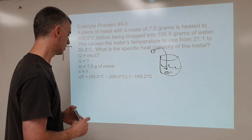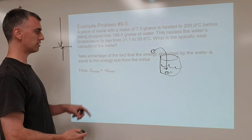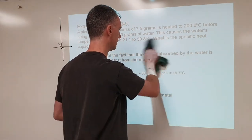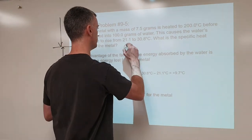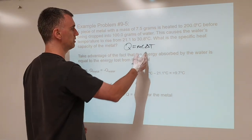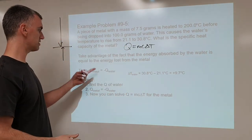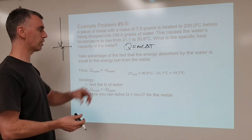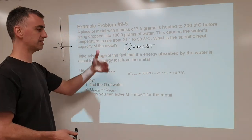We can do some calculation here to get our answer. If the energy of the metal is the opposite of the energy of the water, then we can solve for Q for the water. For the water: Q equals mc delta T. We have the mass of the water, we know the specific heat capacity of water from the data table, and the delta T of the water rises from 21.1 to 30.8. So if we find Q for the water, Q of the metal equals negative Q of the water — however much energy the water gained is how much the metal lost.